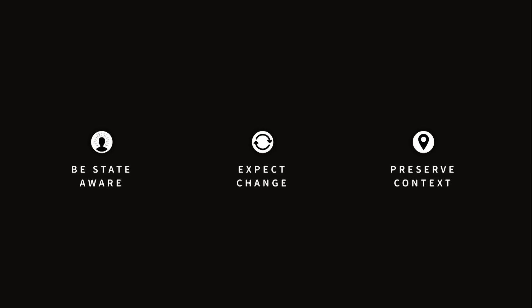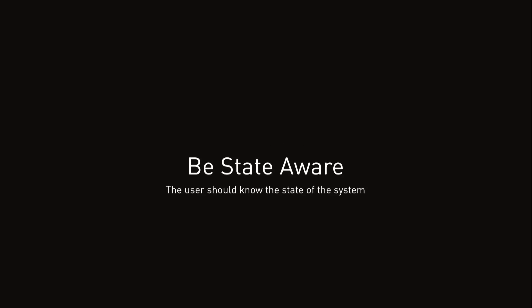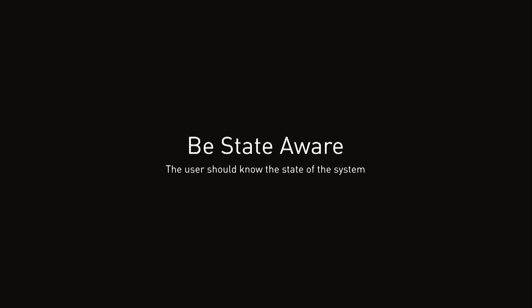Three principles guide how we approach real-time: be state-aware, expect change, and preserve context. Be state-aware — the user should know the state of the system at all times. Our world is irrational. We build frameworks like governments and machines and apps to provide structure to an otherwise unpredictable system. Our goal, when creating real-time apps, is to communicate that our digital world is in fact rational. So let's see some concrete examples.